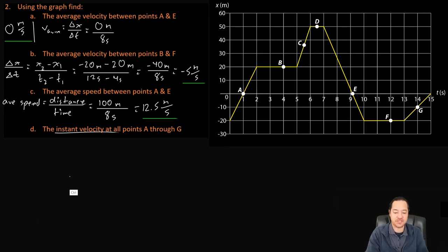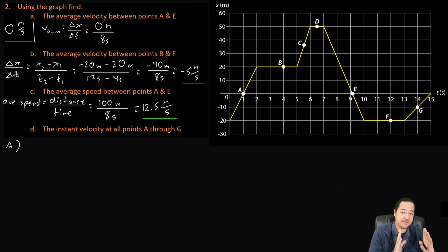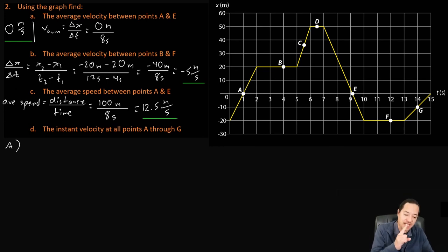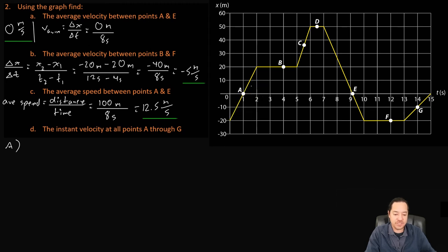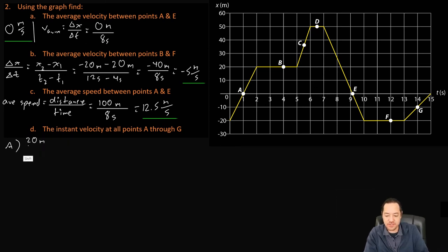Finally, instantaneous velocity at all points A through G. The instantaneous velocity equals the slope of the graph at that point — the slope of the tangent line. At point A, over a delta T of one second we have a delta X of 20 meters, so the slope is 20 meters per one second, giving 20 meters per second.